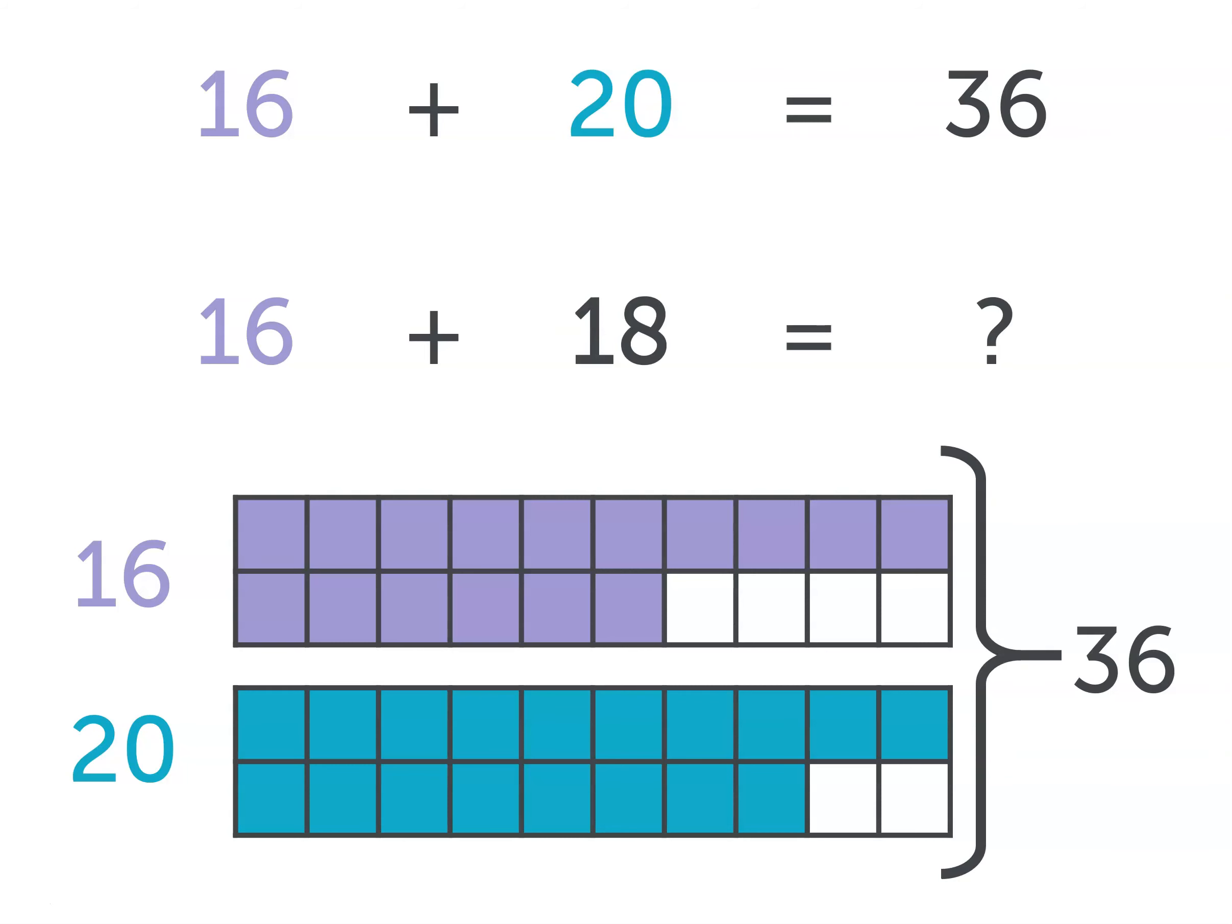Now we have 18 blue blocks, and we got there by subtracting 2 from 20. Because 20 minus 2 is 18.